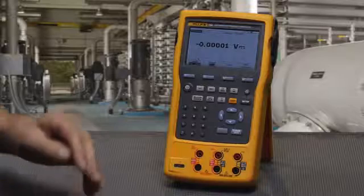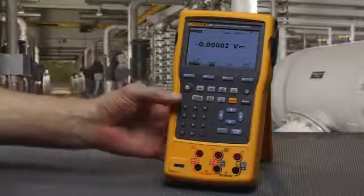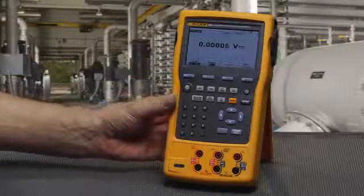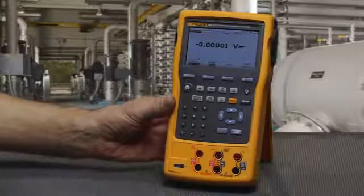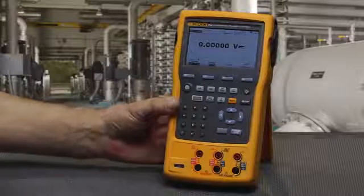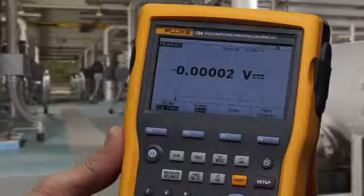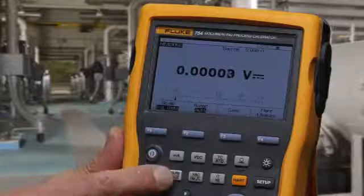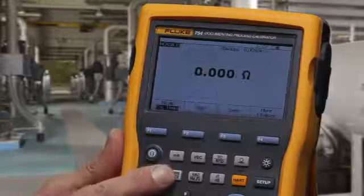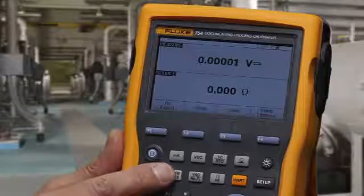The most important thing to know about operating the Fluke 754 or 753 calibrators is one button and three screens. The most important button to understand is the measure source button. It configures whether the calibrator is in the measure screen, the source screen, or the calibration split screen.